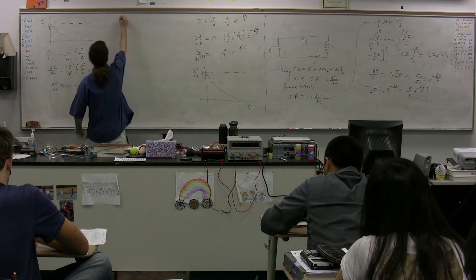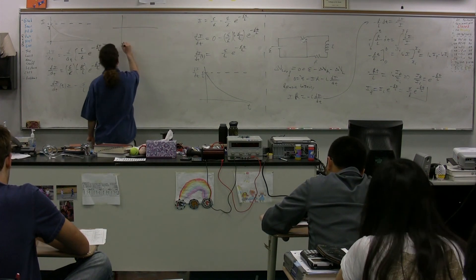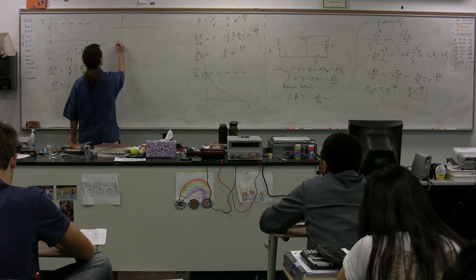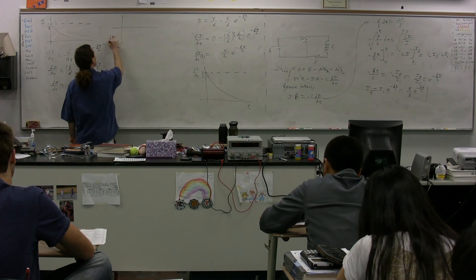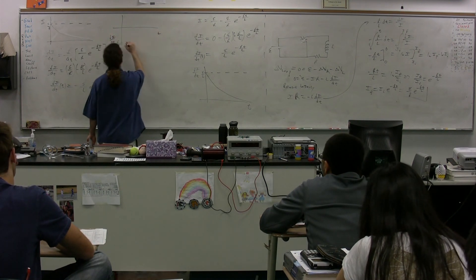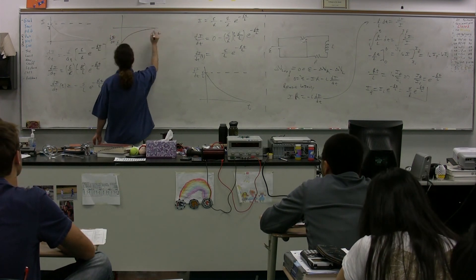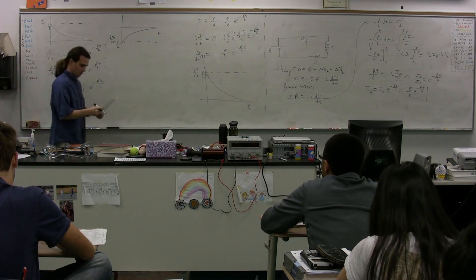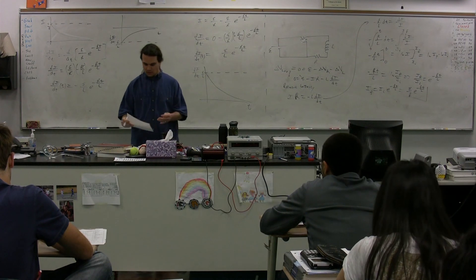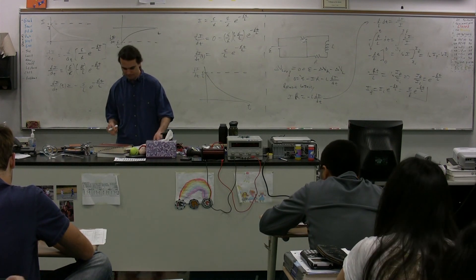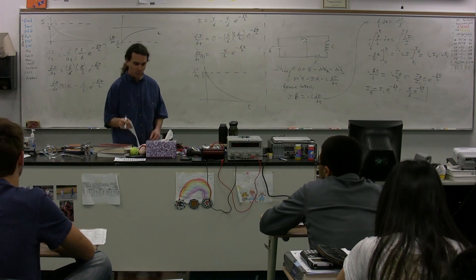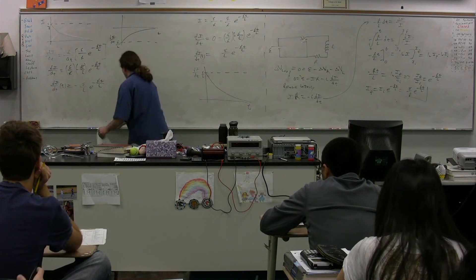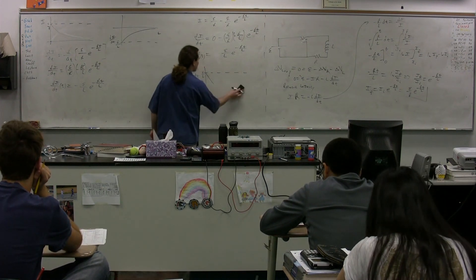And this graph is going to look like this. It simply starts at E over L, dI/dt as a function of time, and it's going to end at zero again. Good. So that's putting energy into and out of an inductor in an RL circuit.